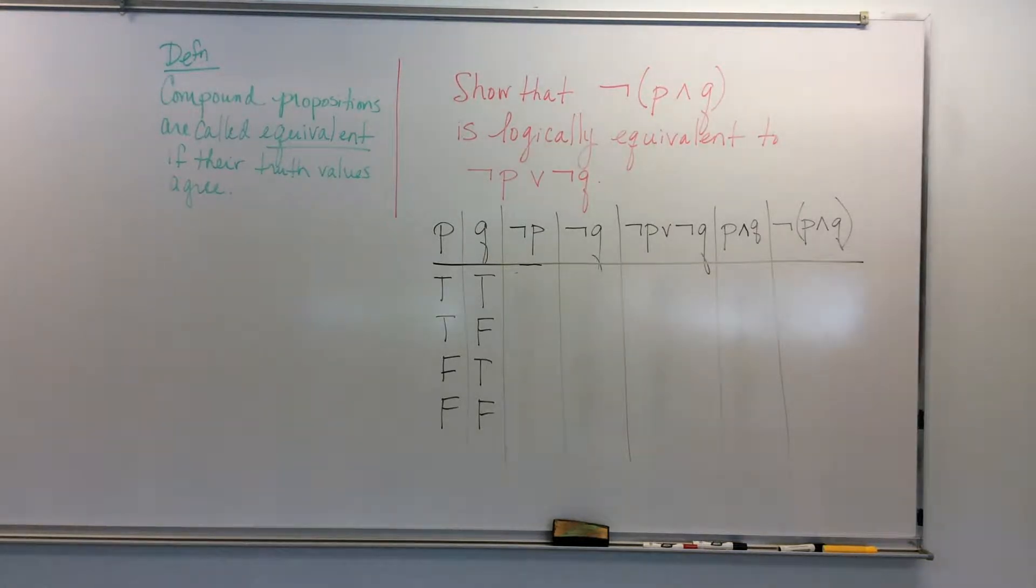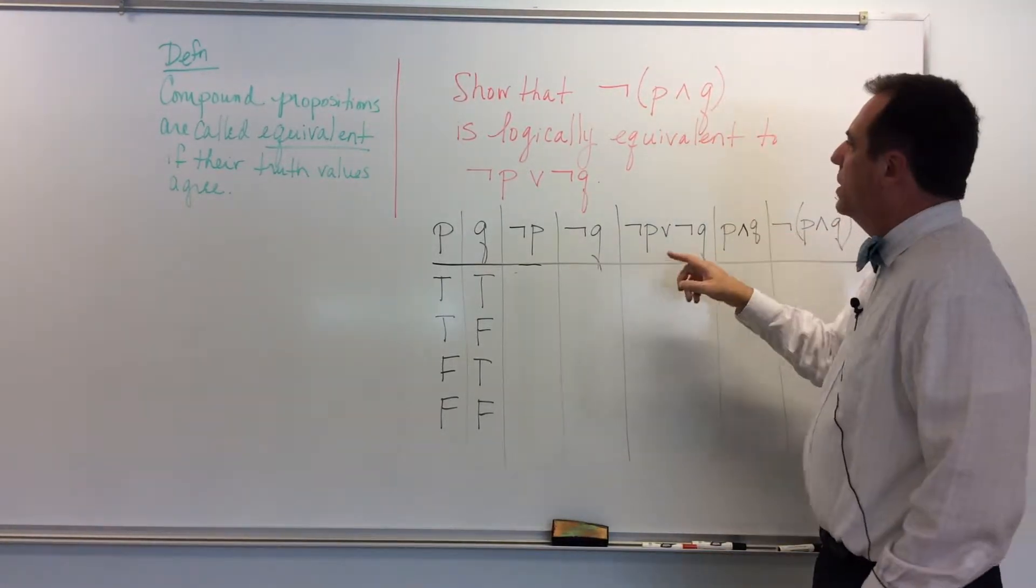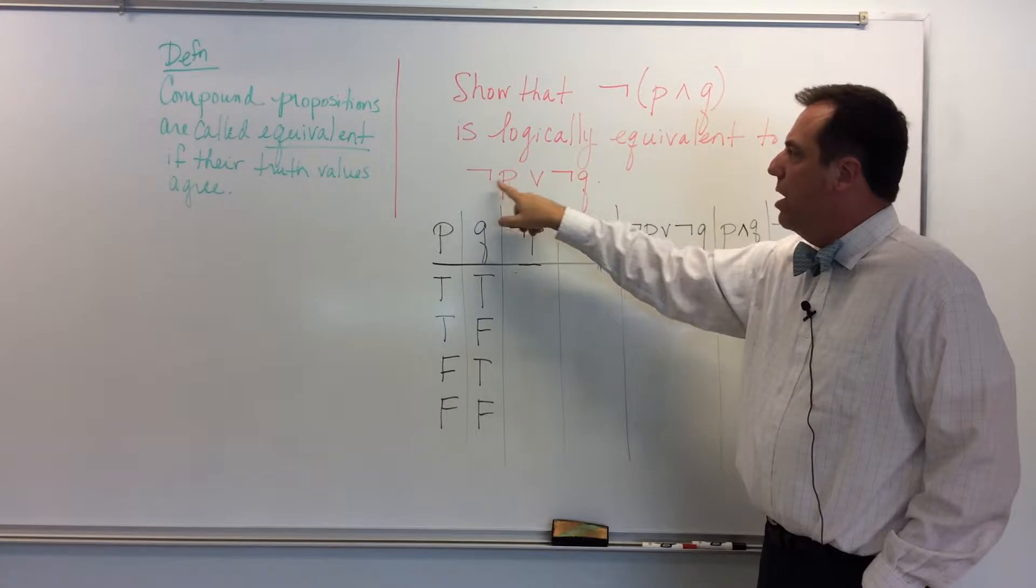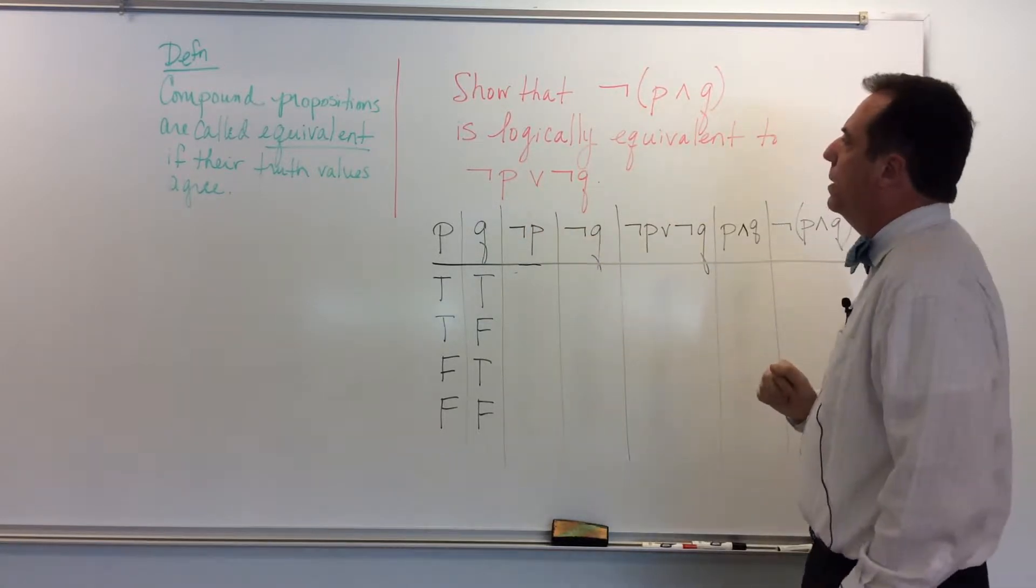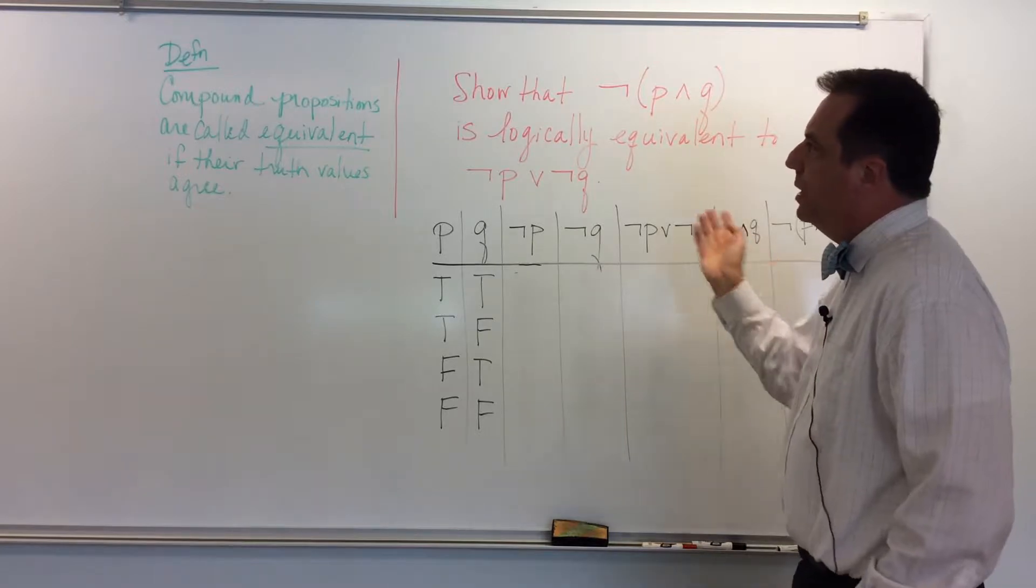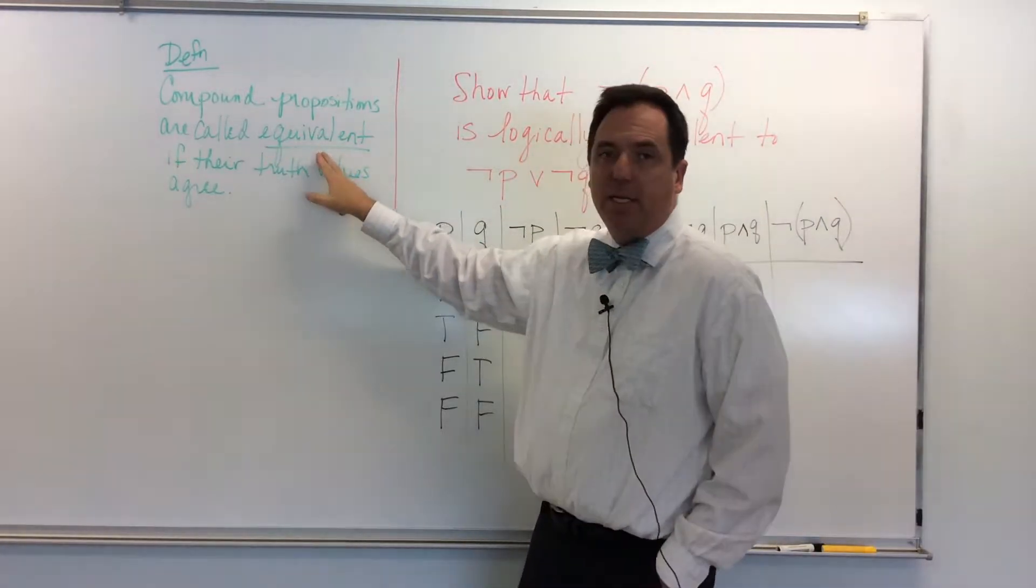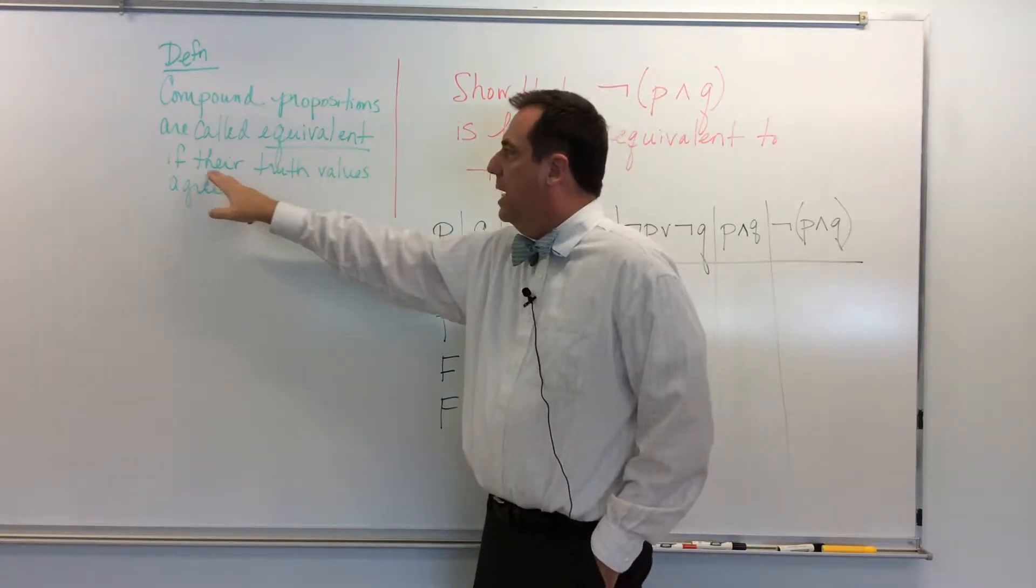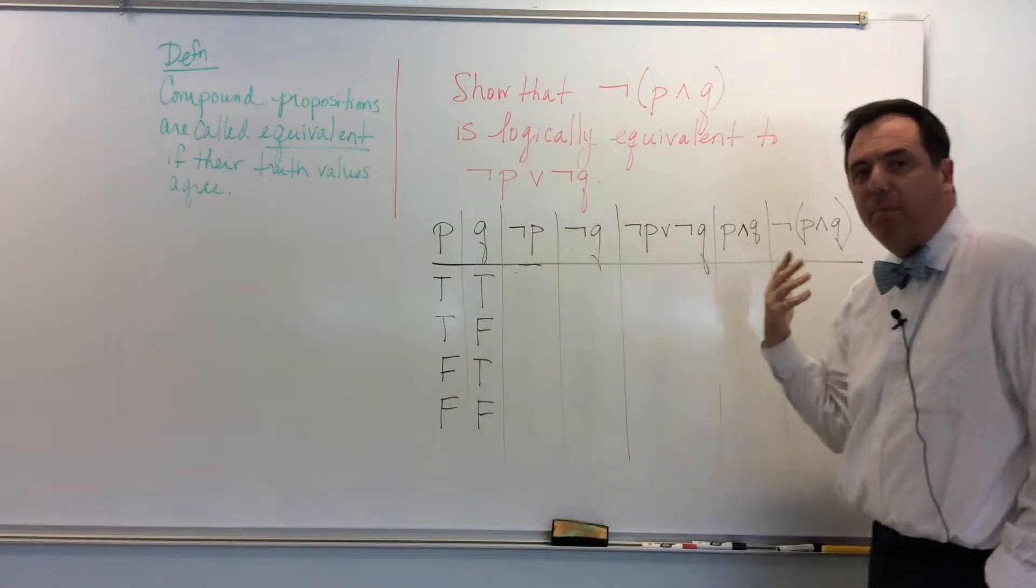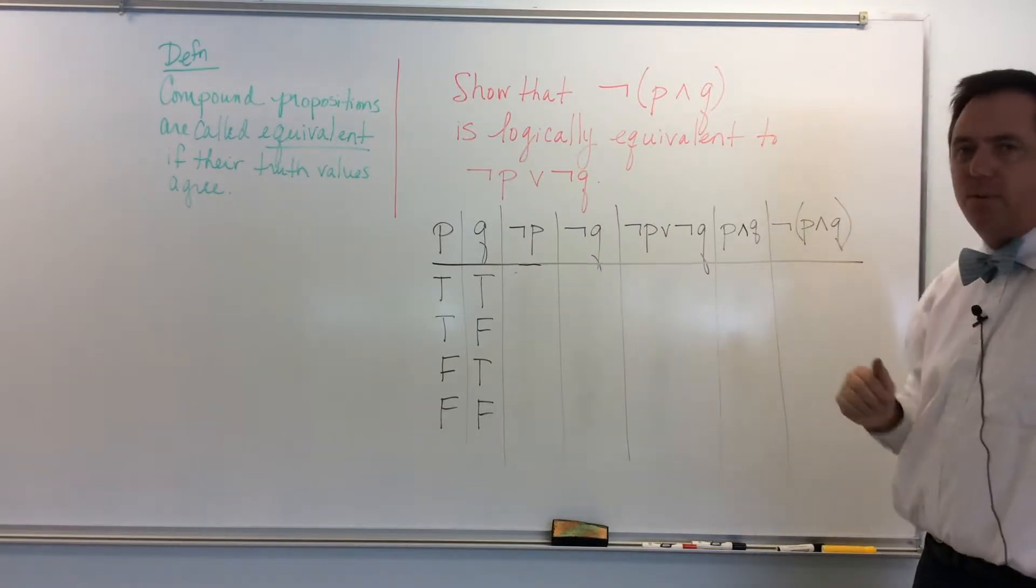Our goal with this problem is to show that not P and Q is equivalent logically to not P or not Q. And so you wonder, what's the definition of logically equivalent? Here it is over here. Compound propositions are called equivalent, or logically equivalent, if their truth values agree. And what better way to figure out whether or not truth values agree than using a truth table?